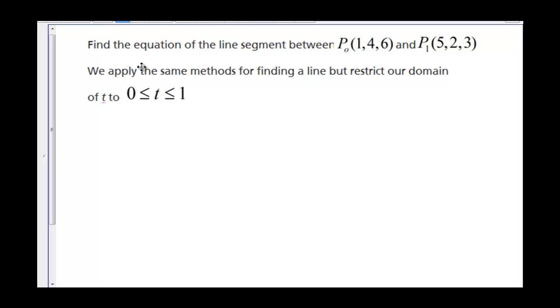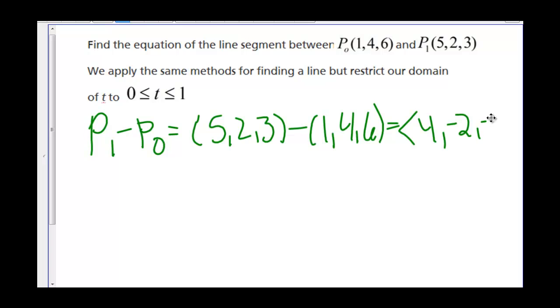So first we need to find a vector going in the direction of the line. We can take P1 minus P0, which is (5,2,3) minus (1,4,6). So that gives us the vector (4,-2,-3).